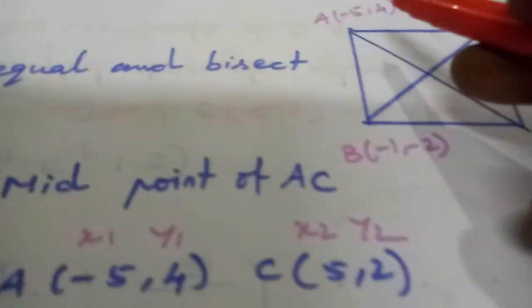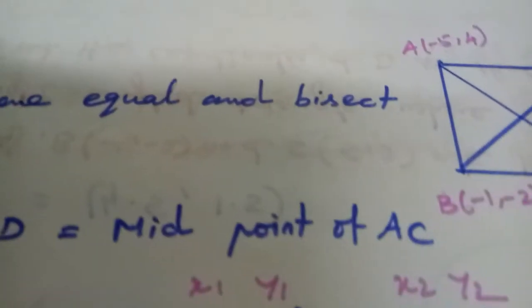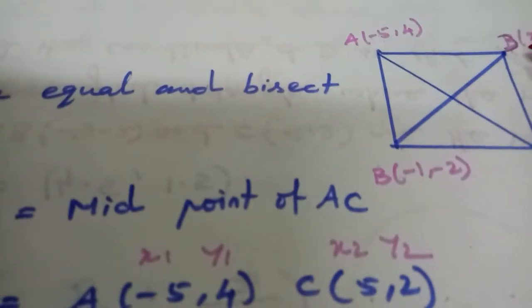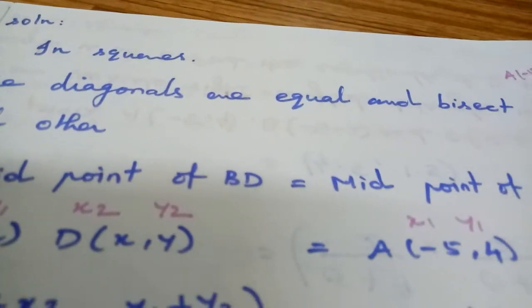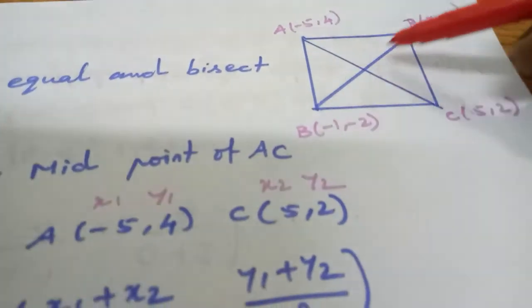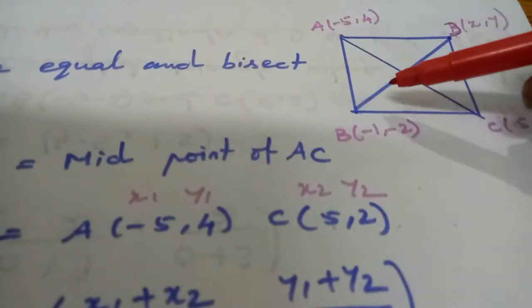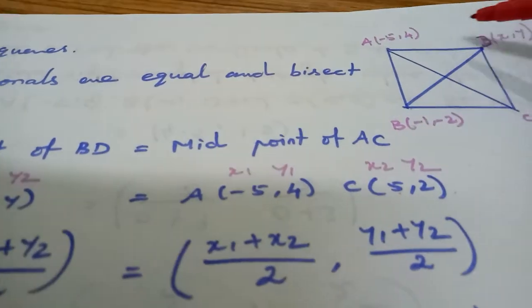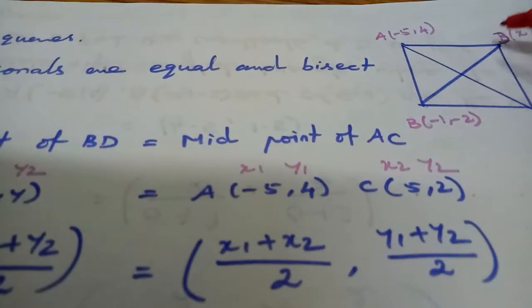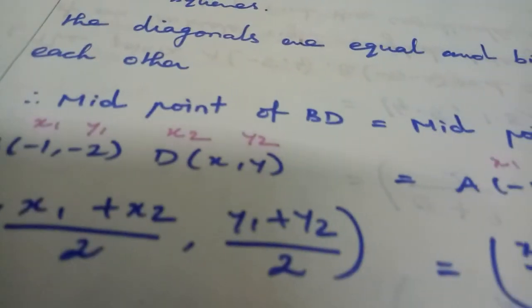Draw the diagram - it's a triangle. We have three points A, B, and C. We need to find point D to make it a square. In a square, the diagonals are equal and bisect each other. So midpoint of BD equals midpoint of AC, and AC equals BD.